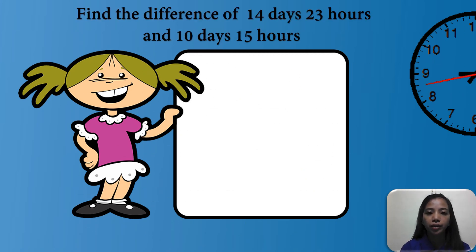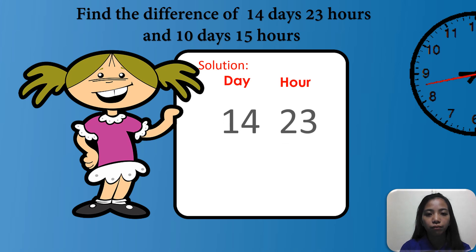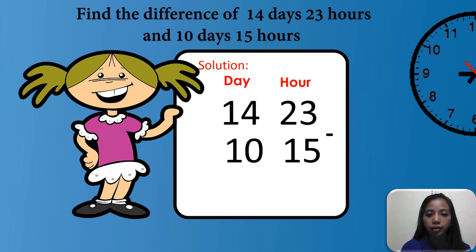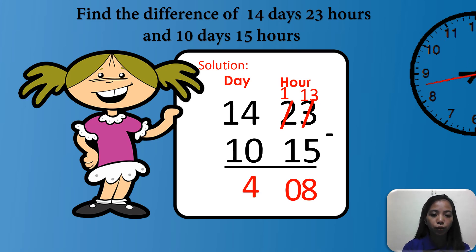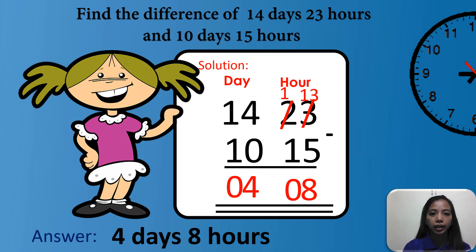Next example. Find the difference of 14 days, 23 hours and 10 days, 15 hours. Write the two units, day and hour. We have 14 days and 23 hours, minus 10 days and 15 hours. Let's solve the hours first: three minus five — can we do this? The answer is we cannot. So we need to borrow from the tens digit. Two becomes one, and three becomes 13. So 13 minus five equals eight. One minus one equals zero. Now the days: four minus zero equals four, one minus one equals zero. So the final answer is four days and eight hours.